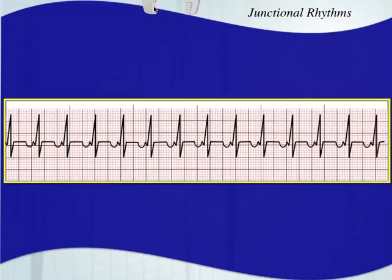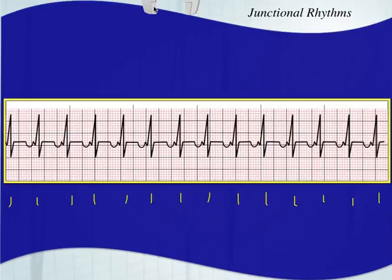This next one is obviously faster — pretty much the same morphology as the one before, except for a much faster rate. Counting 14 complexes gives about 140 beats per minute. So this is junctional tachycardia. You have an inverted P wave, a consistent short PR interval, and a narrow QRS complex. It's a regularly regular rhythm.